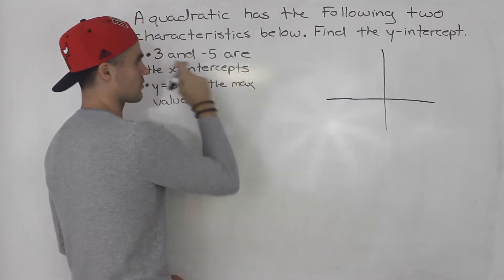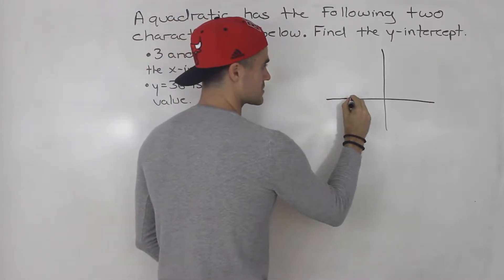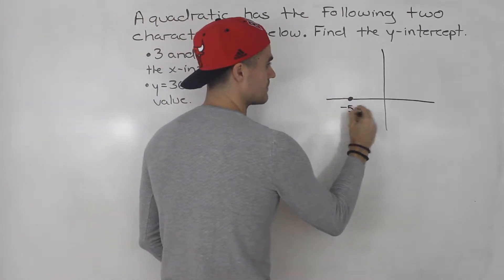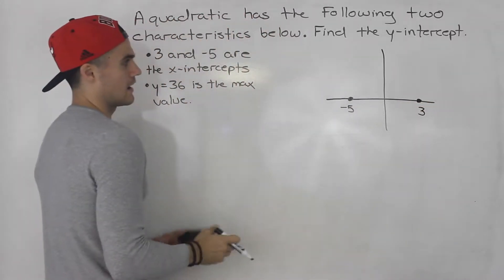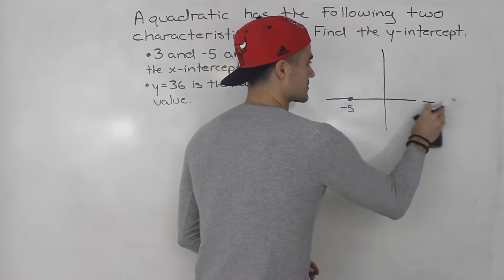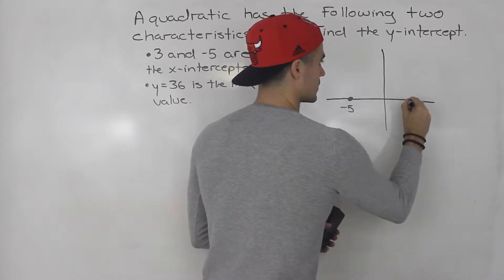So, negative 5 and 3 are the x-intercepts, so this is negative 5, let's say, and then this is 3. Let's actually make it a little more to scale, so let's put the 3 over here.